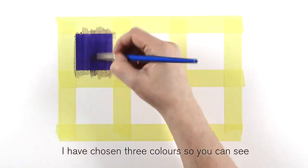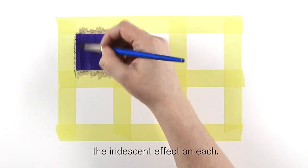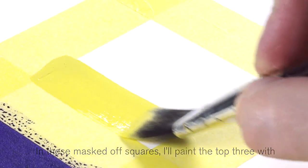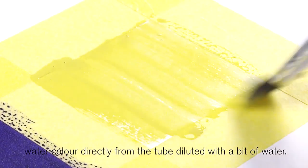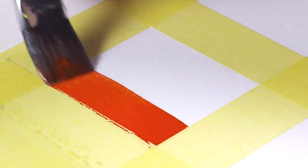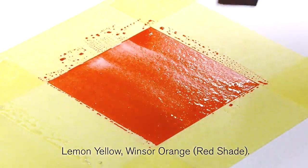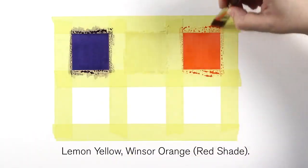I've chosen three colors so you can see the iridescent effect on each. In these masked-off squares I'll paint the top three with watercolor directly from the tube, diluted with a bit of water. Winsor violet dioxazine, lemon yellow, Winsor orange red shade.